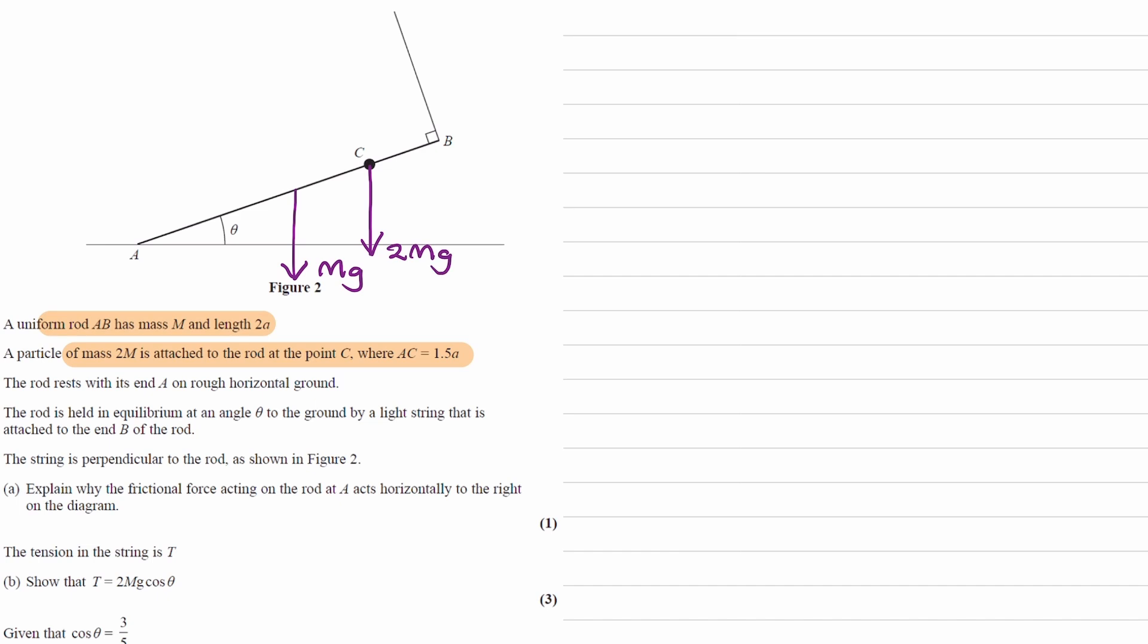Let's put some distances on. It's a uniform rod, so the weight force acts in the middle. The total length is 2a, so this length will be A. AC is 1.5a, so this will be 0.5a. And so with this, making a total length of 2a.